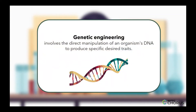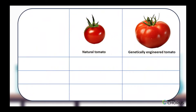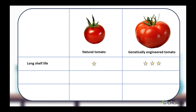Genetic engineering involves the direct manipulation of an organism's DNA to produce specific desired traits. In the tomato industry, genetic engineering has been used to create tomatoes with longer shelf lives, resistance to pests and diseases, and even altered nutritional content.